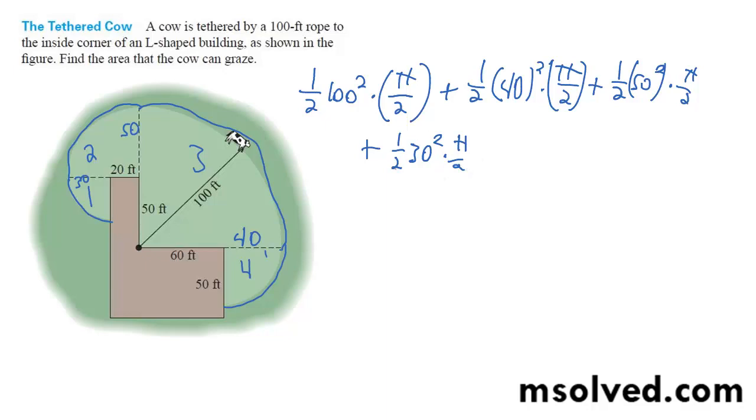Okay, so what we're left with here, so you can factor out one half, and then pi over 2. And then you get 100 squared plus 40 squared plus 50 squared plus 30 squared. So that's pi over 4.